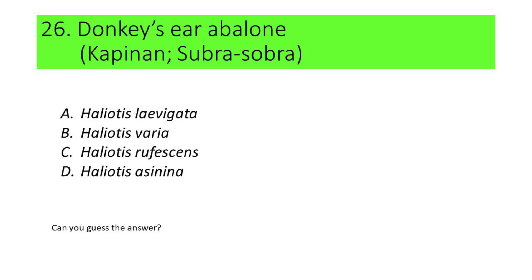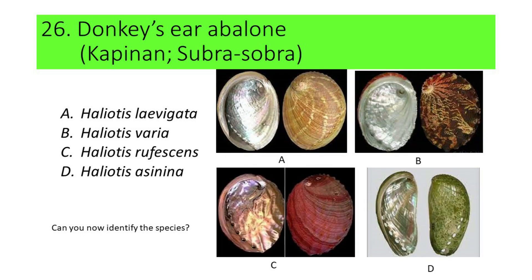If not, here are the pictures. A. Haliotis levigata, B. Haliotis varia, C. Haliotis rufescens, and D. Haliotis asinina. Can you now identify the species? If not, here's another hint. This species has a very elongate shell. If your answer is D or Haliotis asinina, you're correct. Haliotis asinina is commonly called donkey's ear abalone, and locally called capinan or sobra-sobra.